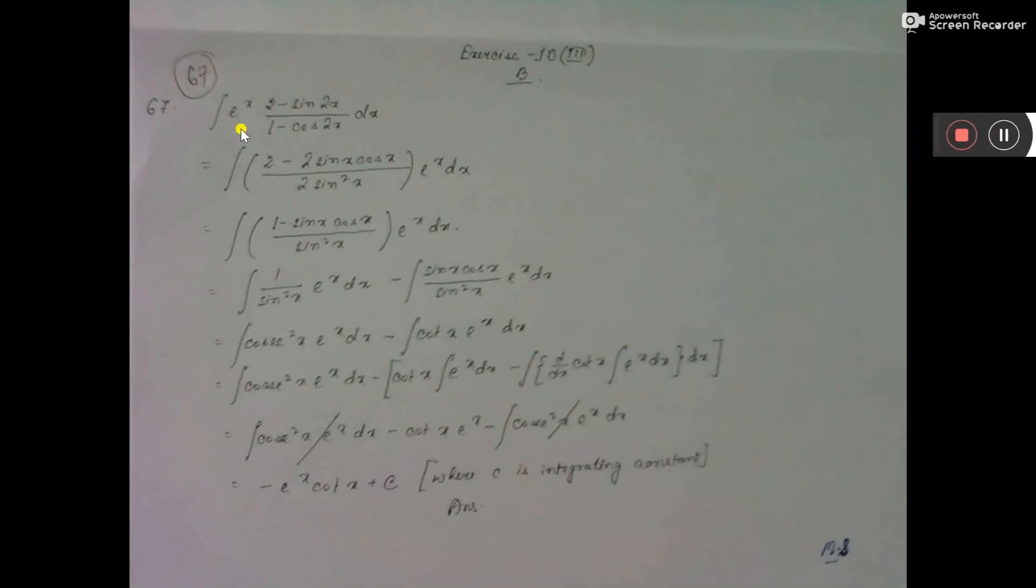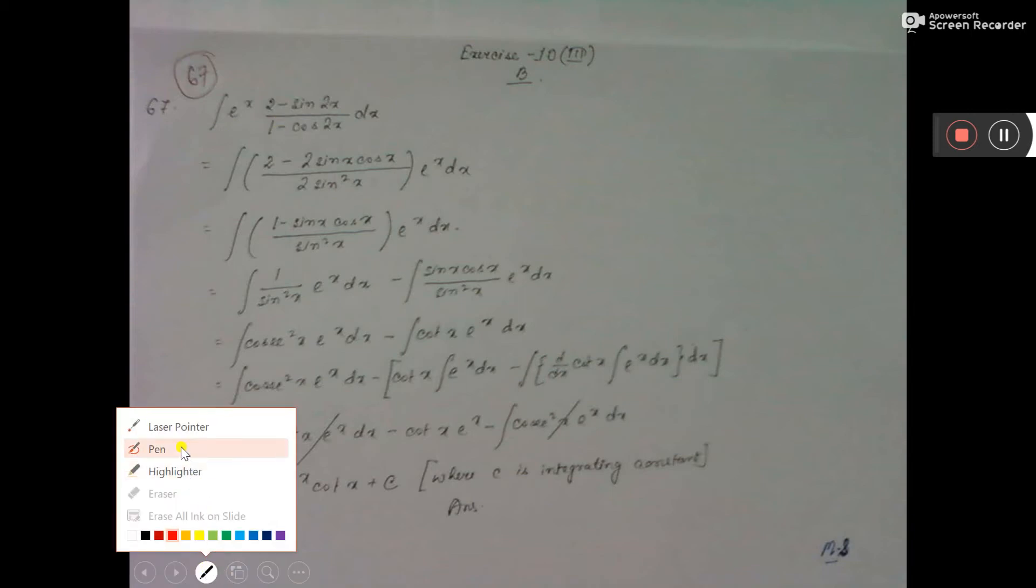So, this is e to the power x, 2 minus sin 2x by 1 minus cos 2x dx.